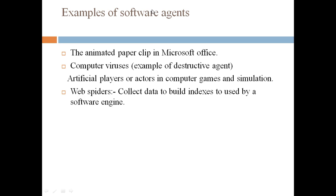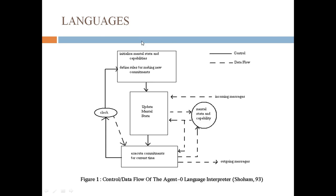Examples of software agents are: an animated paper clip in Microsoft Office, computer viruses (though an example of destructive agent, but this is also an agent), artificial players or actors in computer games and simulation, and web spiders which collect data to build indexes to be used by search engines.